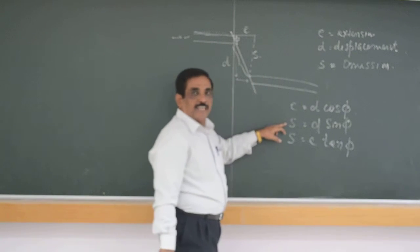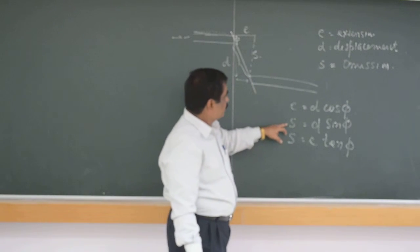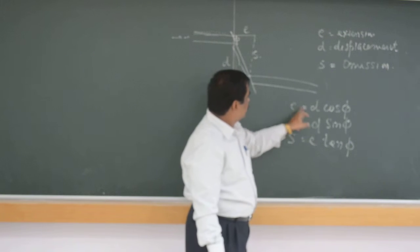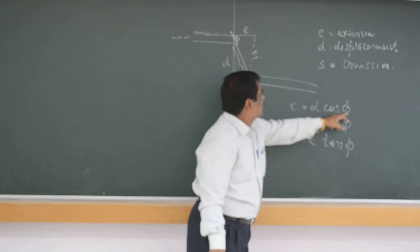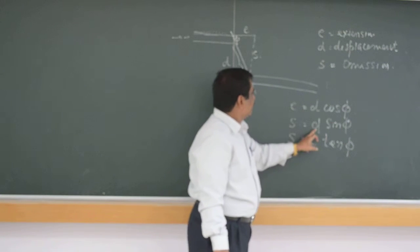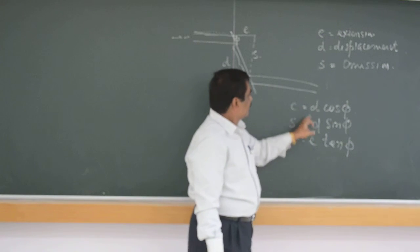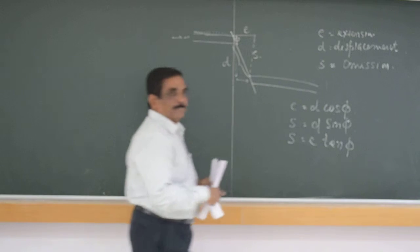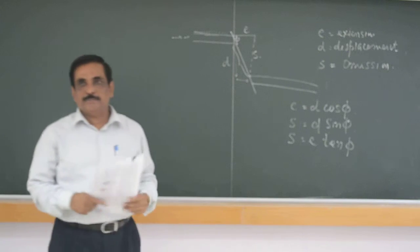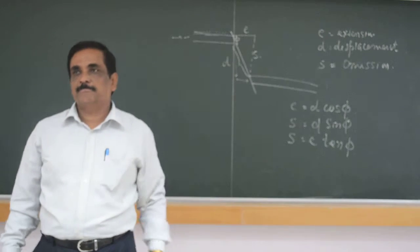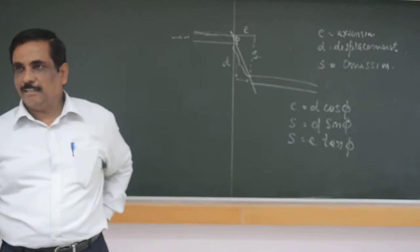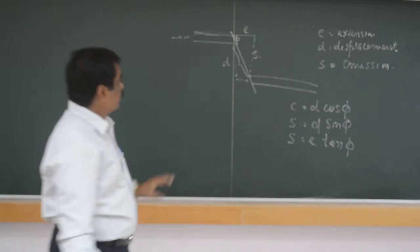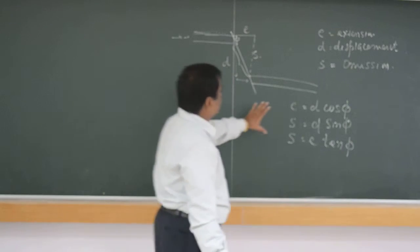S is equal to E tan theta. So again, D cos theta — remember this thing. Many times these formulas — E minor uses, E in more or less horizontal conditions.